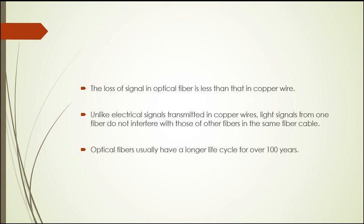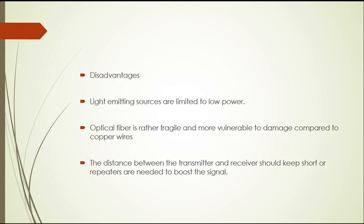Optical fiber usually has a longer life cycle of over 100 years. Disadvantages: light emitting sources are limited to low power. Optical fiber is rather fragile and delicate, and more vulnerable to damage compared to copper wire. The distance between the transmitter and receiver should be kept short, or repeaters are needed to boost the signals. Repeaters are used when transmission is conducted on a very large scale; their purpose is to enhance the transmission signal.